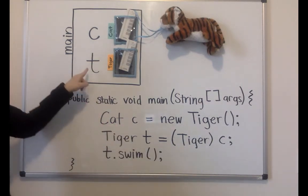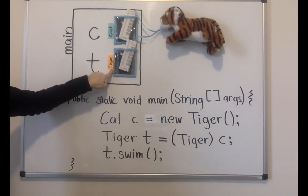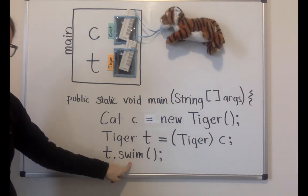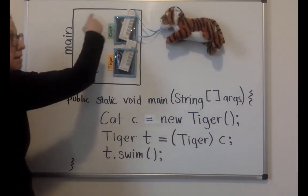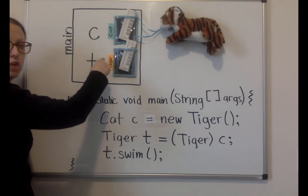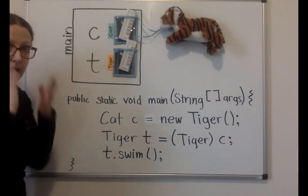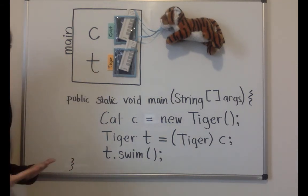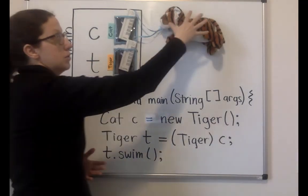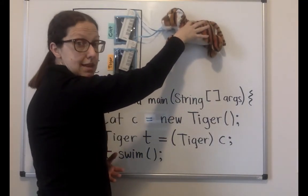To have that actually work, I need to promise that C was referencing something of type Tiger. Now that I have a variable of type Tiger, I can call t.swim(). Because remember, we use the type of the variable to figure out if the method will compile. And then when we actually call the method, we're able to go to the object's class to look for that method.